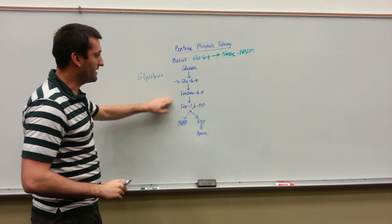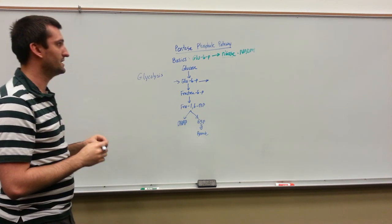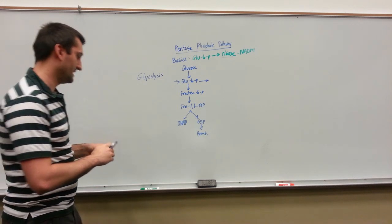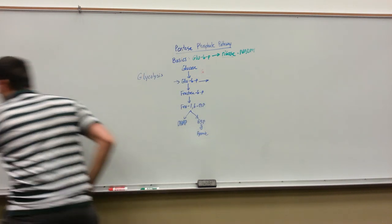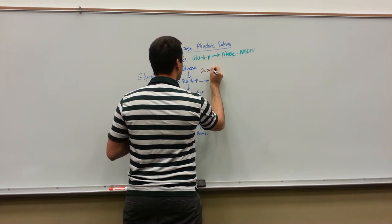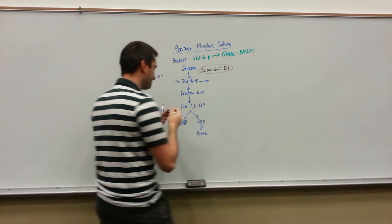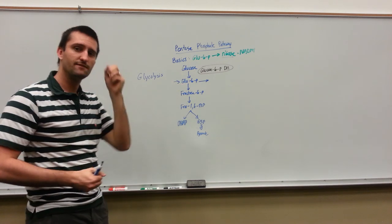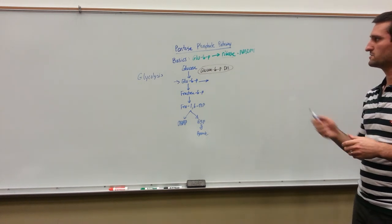Glucose-6-phosphate can either go down the glycolysis pathway like normal, or the body can shunt it into the pentose phosphate pathway. To do this, we're going to use an enzyme — and this is the very important enzyme. Glucose-6-phosphate dehydrogenase is going to be the enzyme. It's going to steal some of this glucose-6-phosphate from the glycolysis pathway and turn it into the pentose phosphate pathway.